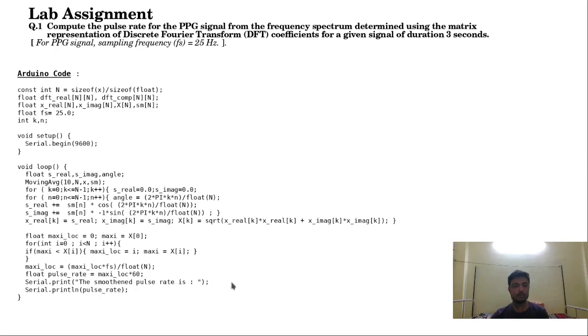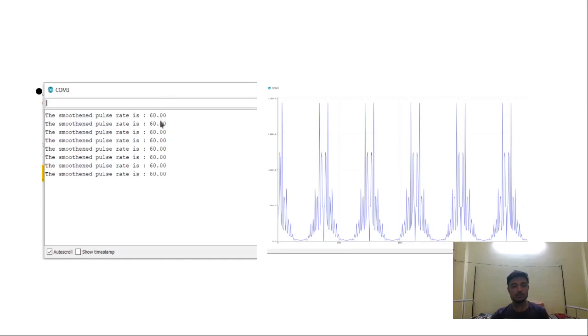So the smoothened pulse rate, which means after moving averaging, the pulse rate, we can display it on the monitor. This is the data we obtained for the pulse rate.